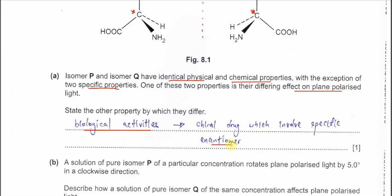For example, the drugs that treat TB use a specific enantiomer. We know that with a specific enantiomer or optical isomer, either the positive or negative isomer, sometimes one of them is active in treatment. So it can treat certain diseases. This is the meaning of biological activities — it's about the chiral drugs.